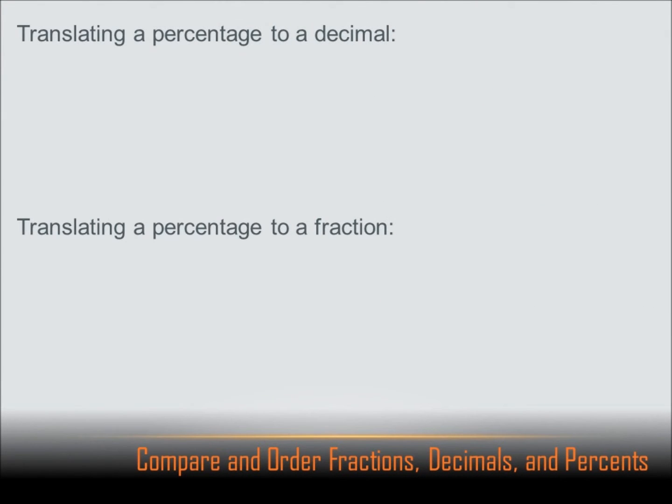How about translating a percent into a decimal or a fraction? Well, that's not that hard either. Let's say I've got 38%. Well, you remember when we converted a decimal to a percentage, we moved the decimal point 2 places to the right, which was the same thing as multiplying by 100. Well, if I want to change a percent to a decimal, I just reverse that process. I move the decimal point 2 to the left, and I get 0.38, which is equivalent to 38%.